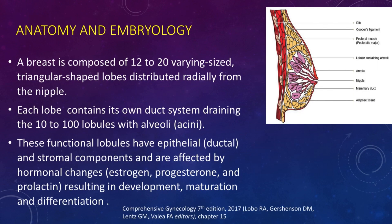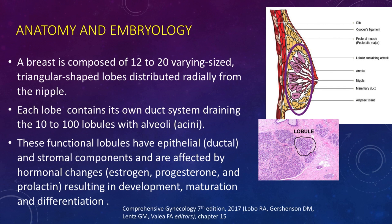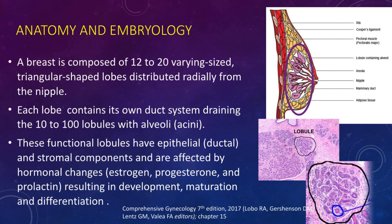The breast is composed of 12 to 20 varying-size triangular-shaped lobules or lobes distributed radially from the nipple. Each lobe contains its own duct system, draining 10 to 100 lobules with alveoli or aciniae. Individual lobules have epithelial or ductal and stromal components and are affected by hormonal changes such as estrogen, progesterone, and prolactin, resulting in development, maturation, and differentiation.